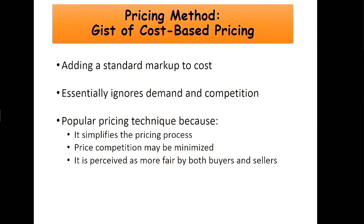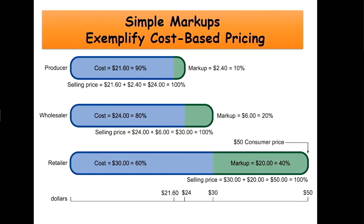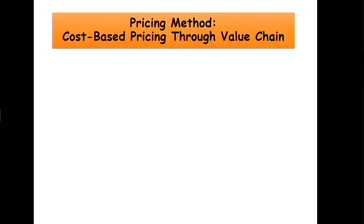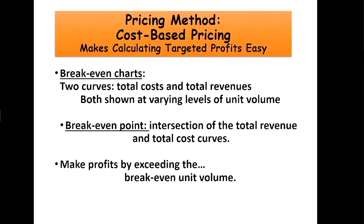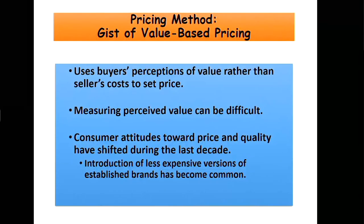The gist of cost-based pricing is to add a markup to your total costs. Going through the channel, you've got the manufacturer's markup and then the retailer's markup. You look at different costs throughout the value chain to see who's making different money — who's making the most markup. This is often driven by who has power within the channel. Cost-based pricing makes it easy to do break-even analysis and break-even charts.